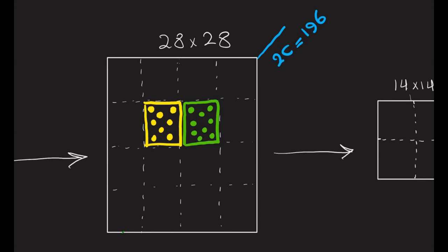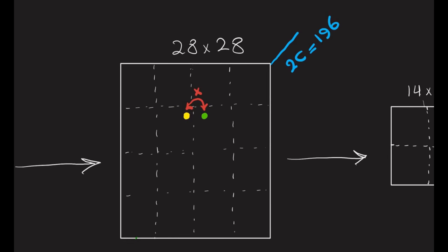Consider two tokens that are close to each other but belong to different windows — one in the yellow window and one in the green window. Right now they are not related to each other, but they might be part of the same object. We want to capture that relationship.